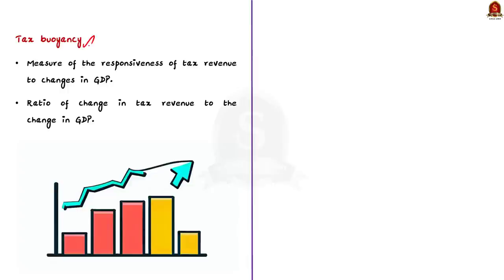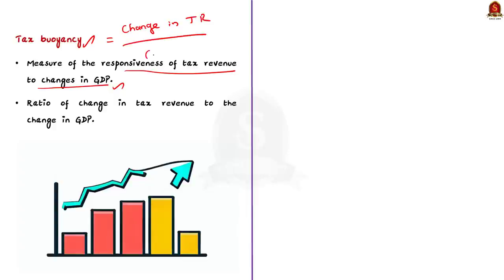Tax buoyancy is a measure of the responsiveness of tax revenue to changes in GDP. In simple words it is the ratio of change in tax revenue to the change in GDP. For example, say in a particular year the GDP increases by 10 percent.